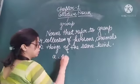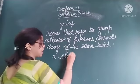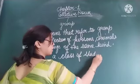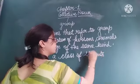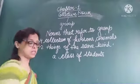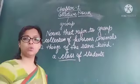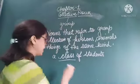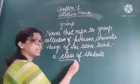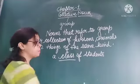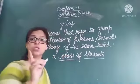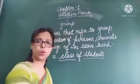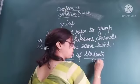For example, if I say 'class' or 'students' — when we say class, it does not mean only one student. Class means there are many students. So class is a collective noun. But students is not a collective noun; students is a common noun.